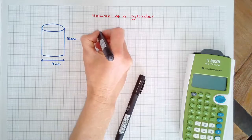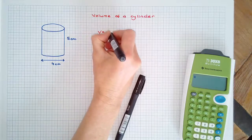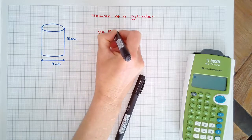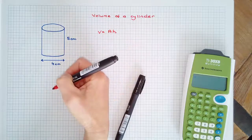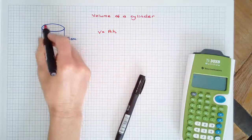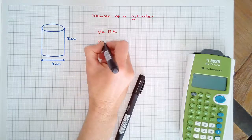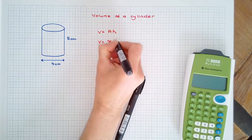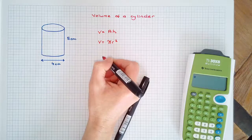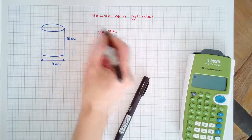The volume of prisms can be found as the area of the base times the perpendicular height or depth. In our case, the area of our base is πr², r being the radius, times the height or depth of the cylinder, h.